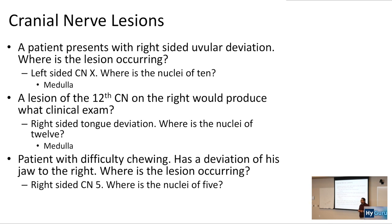Where is the nuclei of CN 5 located? The nuclei of 5 is located at the pons — exactly, very good.